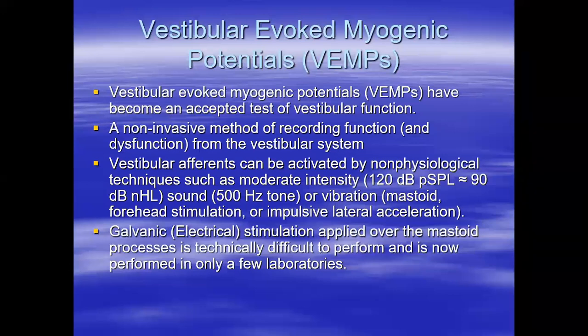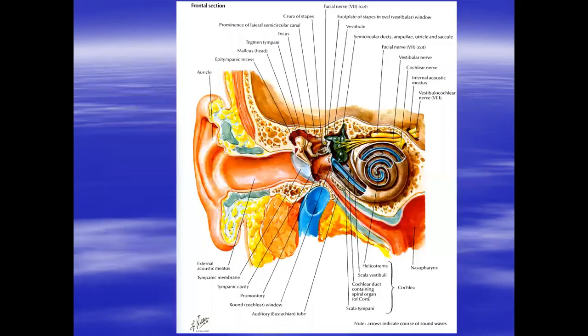Other forms of stimulation include vibrating the skull on the forehead, on the mastoid, or even electrical stimulation across the mastoid. However, the emphasis of this talk will be on air-conducted sound, which is familiar to most people — especially those already doing brainstem auditory evoked potentials. So how is it possible for sound stimulation to stimulate a system responsible for detecting head acceleration?